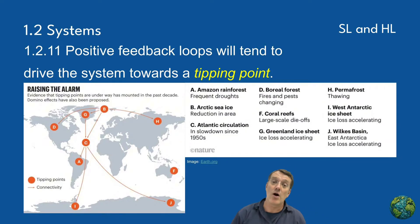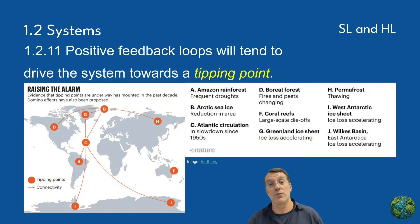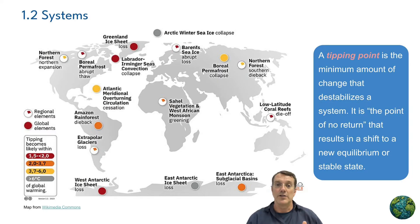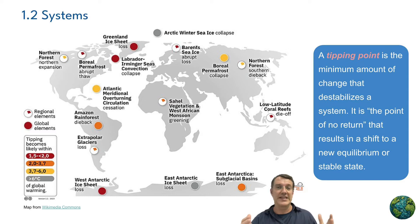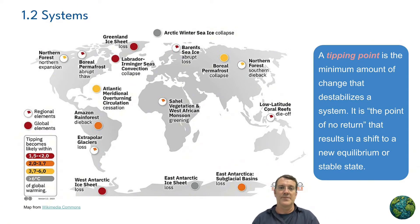Positive feedback loops often drive systems towards tipping points. A tipping point is a critical threshold where small changes can trigger really significant, usually irreversible shifts in the system's state. These are sometimes called points of no return, or a regime change.